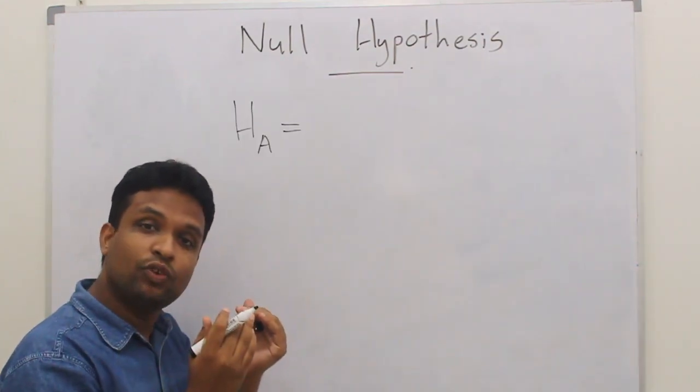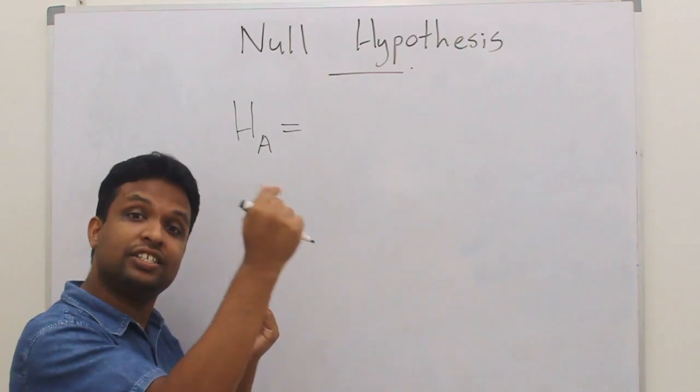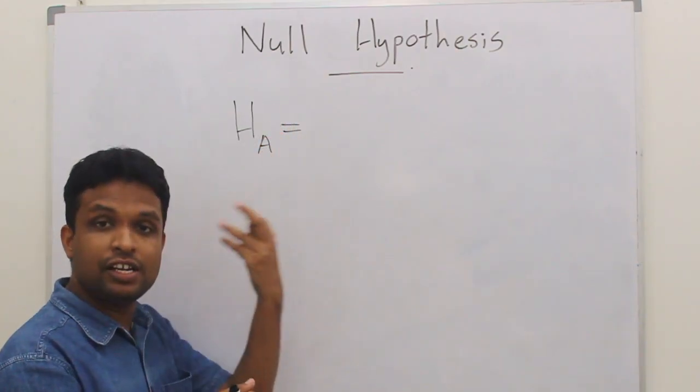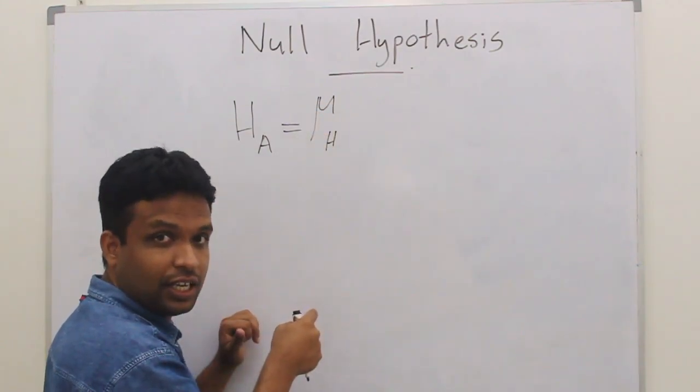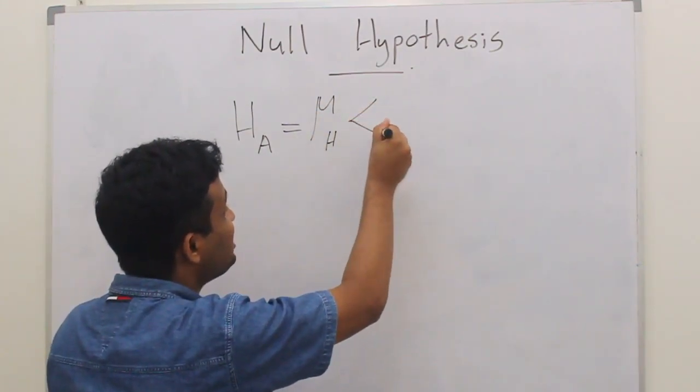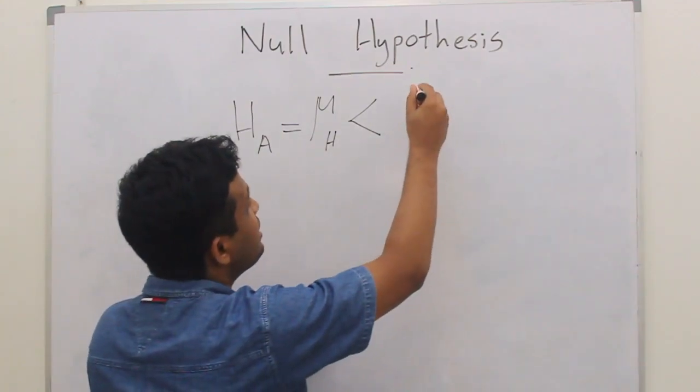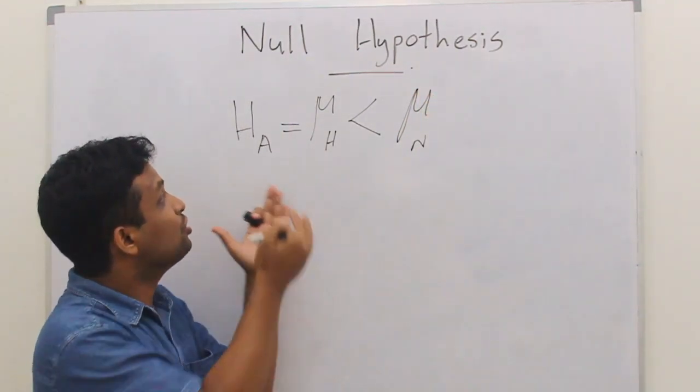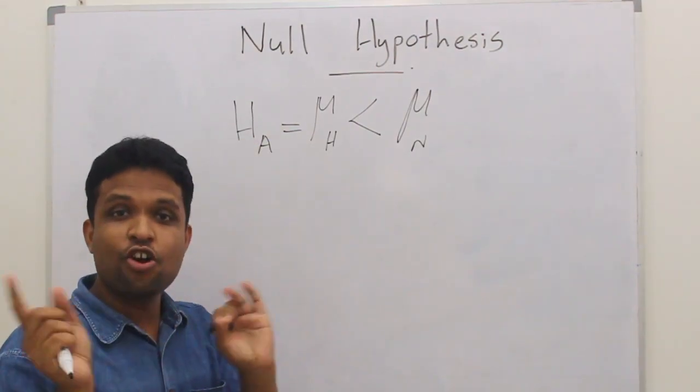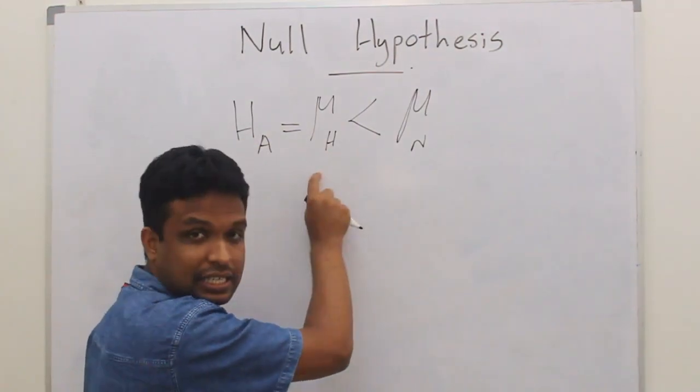The average birth weight of babies born to HIV infected mothers, we will name that mu_H, mu HIV, is significantly less than the average birth weight of the normal population. So this is our hypothesis.